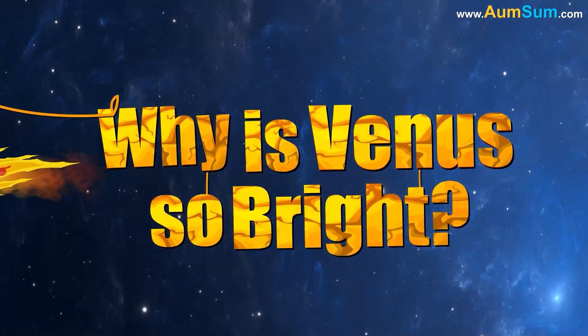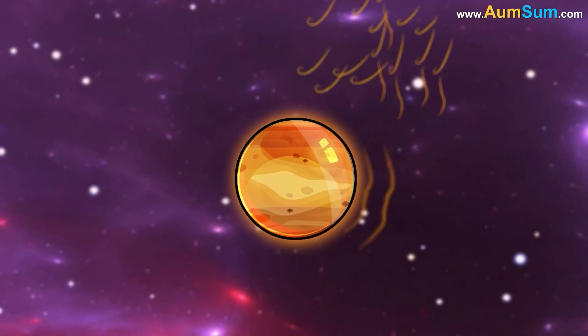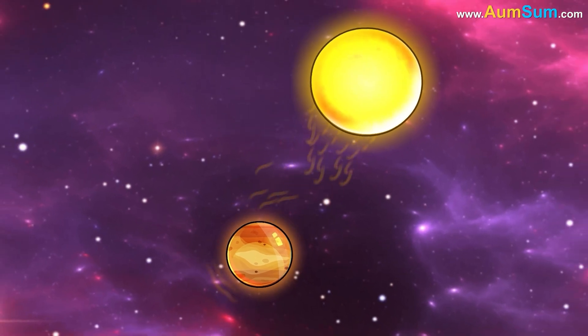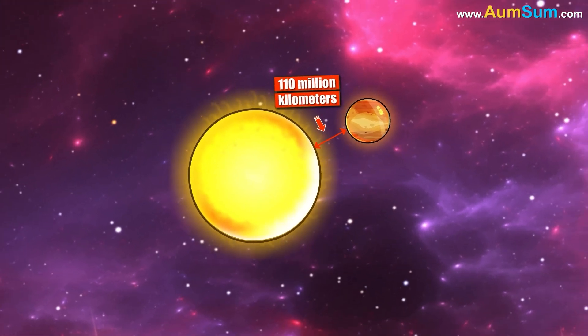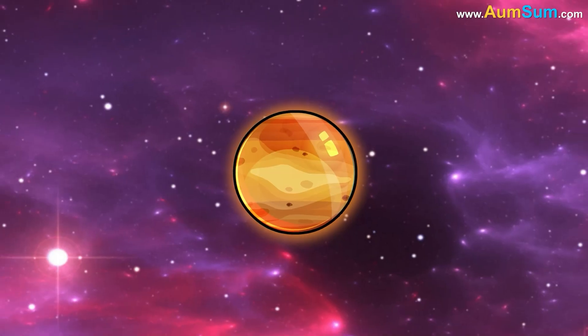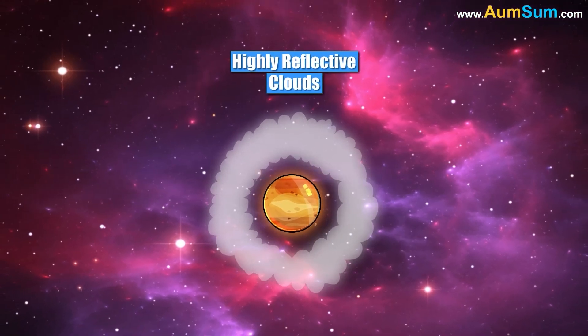Why is Venus so bright? The first reason is Venus' proximity to the Sun. It averages only about 110 million kilometers away from the Sun. Secondly, Venus is blanketed by highly reflective clouds.